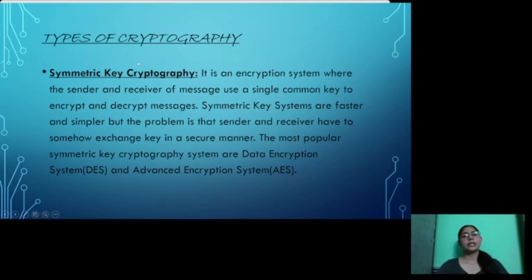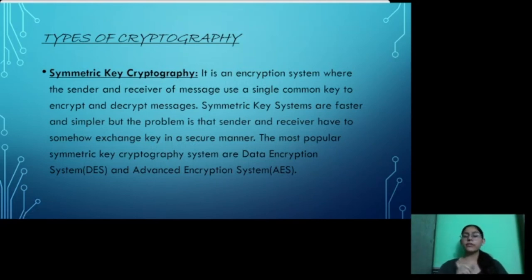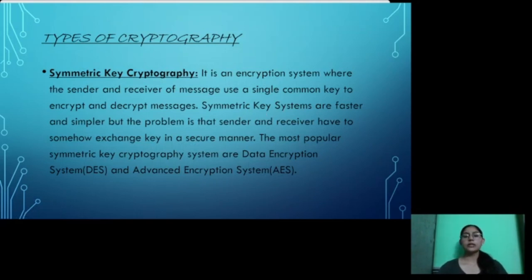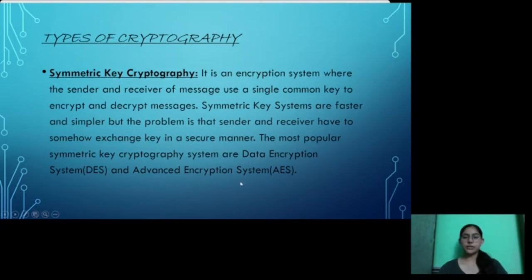Next is the types of cryptography. There are two types. First is symmetric key cryptography, where the sender and receiver of a message use a single common key to encrypt and decrypt the message. Symmetric key cryptography is faster and simpler, but the problem is that the sender and receiver have to somehow exchange the key in a secure manner. Popular algorithms used are Data Encryption Standard (DES) and Advanced Encryption Standard (AES).